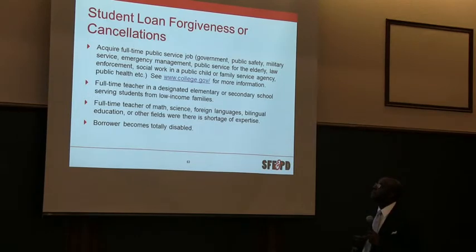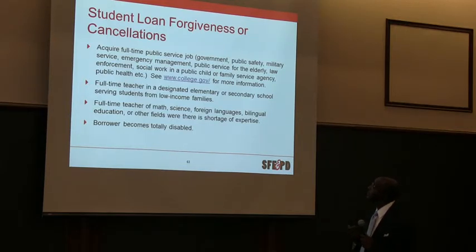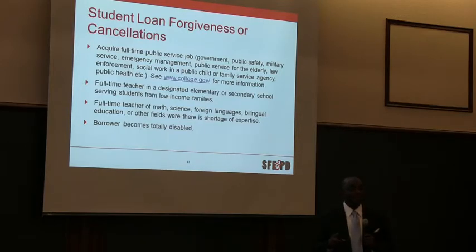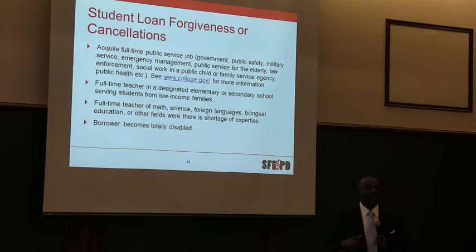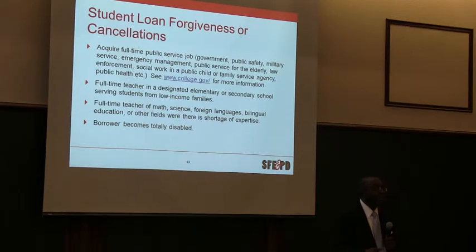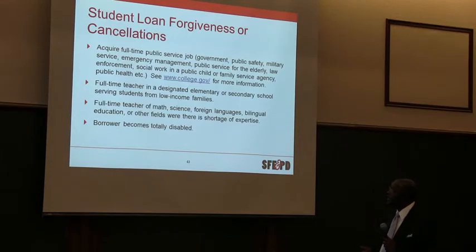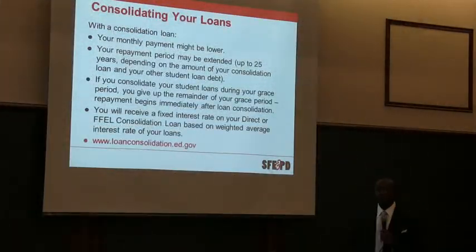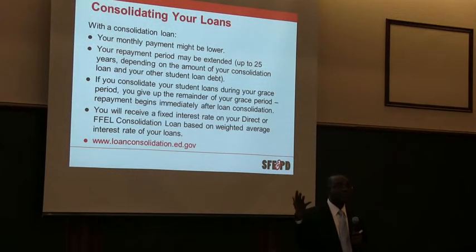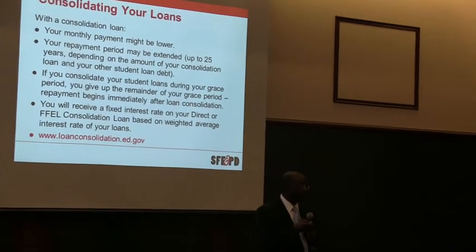You also have the possibility of having your loan forgiven or canceled. If you work in public service — government, public safety, military, emergency management, public service for the elderly, law enforcement, or social work — that's a possibility. If you're a math teacher or a foreign language teacher in districts having difficulty recruiting, you can get your loan forgiven. If you're working in a low-to-moderate income area or an area being rejuvenated, that's another possibility. And if you're totally disabled — and we hope that never occurs — you also qualify. Additionally, if you have four or five different student loans, you can consolidate them into one loan.